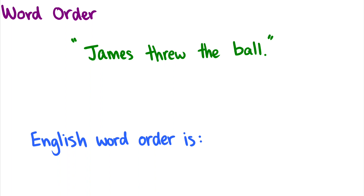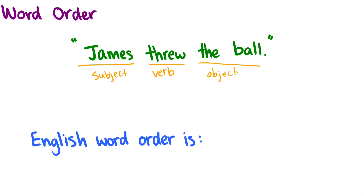Word order was very briefly touched on in the introduction video. In English, if we have the sentence 'James threw the ball,' there are three things we can note: the verb occurs in the middle, the subject occurs at the beginning, and the object occurs at the end. Through this we can say that English word order is Subject-Verb-Object, or SVO.